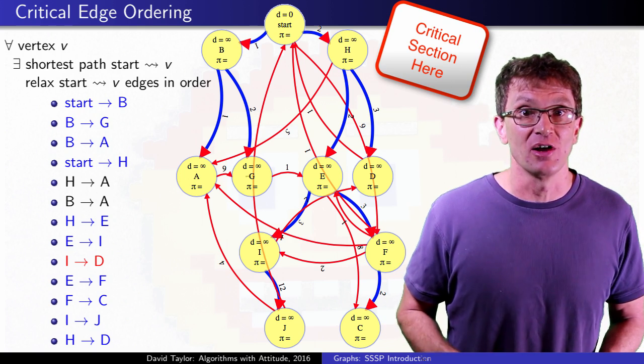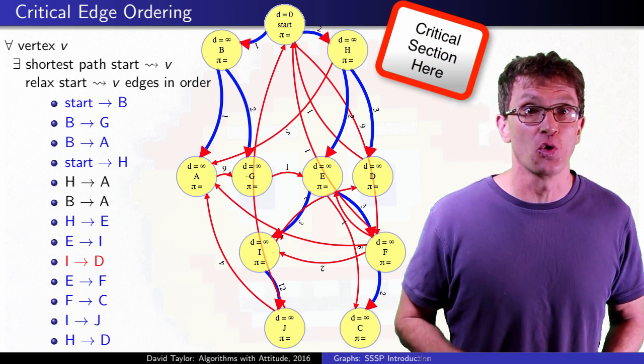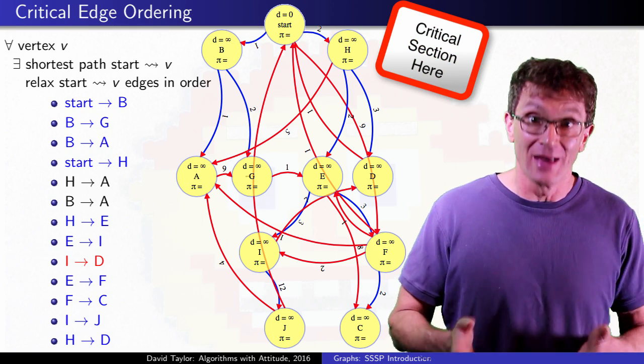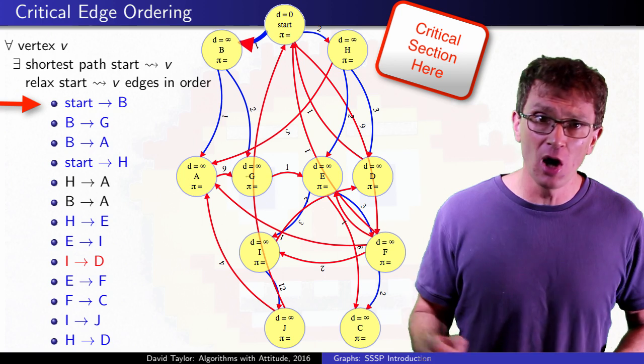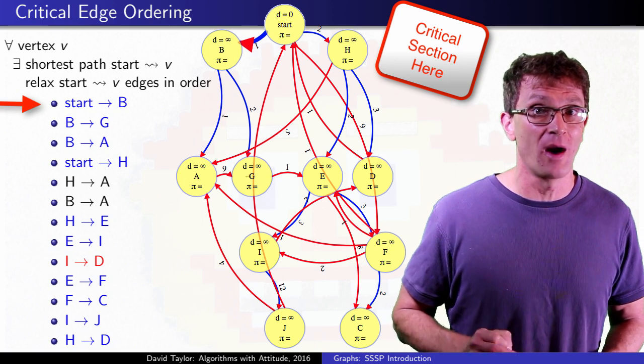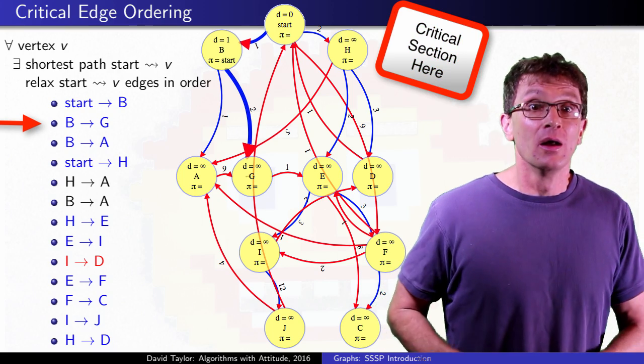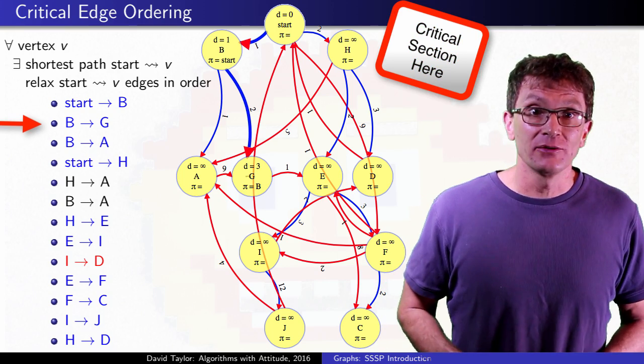Each of the algorithm's relaxations will contain a critical edge ordering from the shortest path tree that the algorithm ends up finding. As long as we manage to relax edges from that tree, where the shortest path is relaxed in order somewhere, we will end up with the right answers.